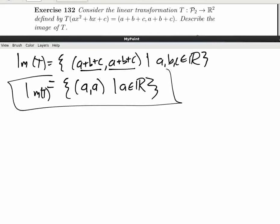So this is one perfectly good answer. So describe the image of T. This is what it boils down to. It's all possible pairs such that the two components are equal.